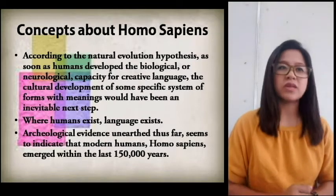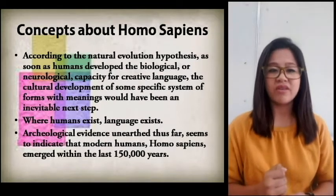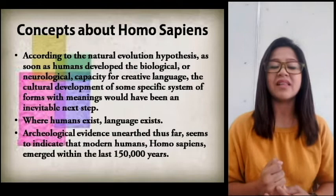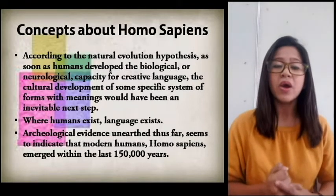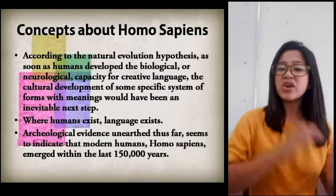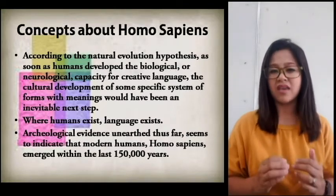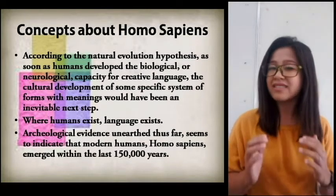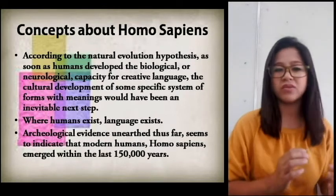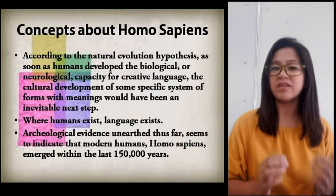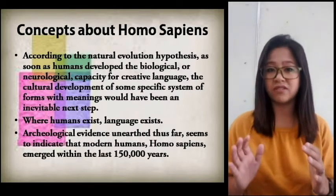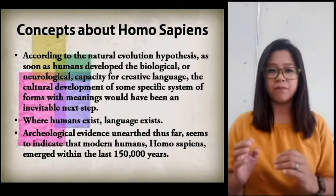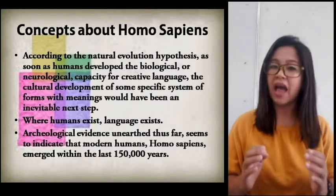Archaeological evidence on Earth thus far seems to indicate that modern humans — Homo sapiens — emerged within the last 150,000 years. So if Homo sapiens emerged within the last 150,000 years, and where humans exist language exists, therefore this language existed a long time ago — at least 150,000 years back. But take note, these are modern humans, Homo sapiens, which means there were humans before them, so language goes back even further than 150,000 years.